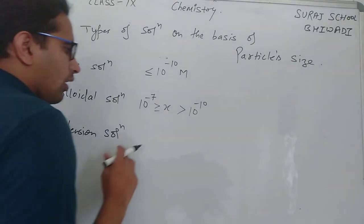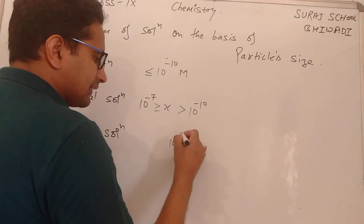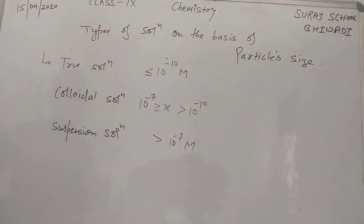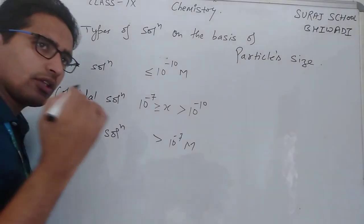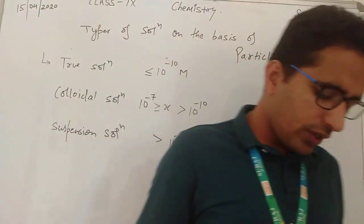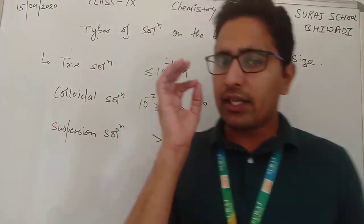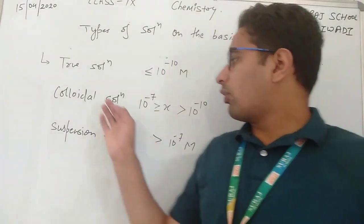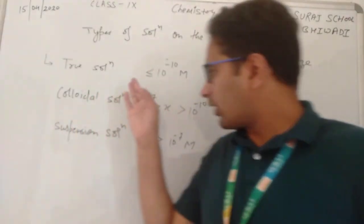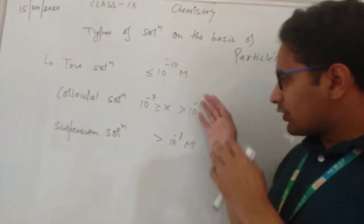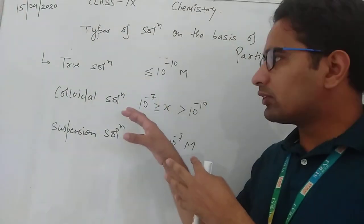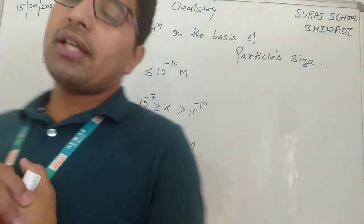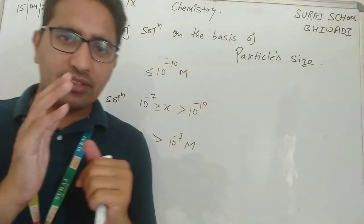Suspension solution वो होता है जिसमें particle का size 10⁻⁷ meter से बड़ा होता है। तो suspension solution की definition: solution in which particle size is greater than 10⁻⁷ meter। Colloidal solution की definition: particle size 10⁻⁷ से 10⁻¹⁰ meter के बीच। और true solution: particle size 10⁻¹⁰ meter या उससे छोटा। Is that clear?